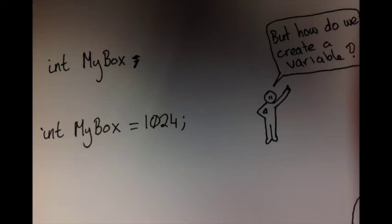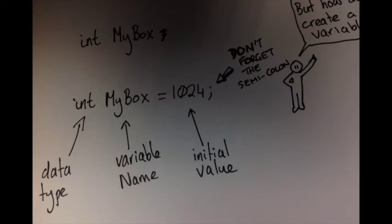If you use the first example of int my box and you don't give it a value, the C-sharp compiler will give you an error saying that you haven't actually initialized the variable or used it. So it's good practice to normally when you declare the variable give it an initial starting value even if it's zero.